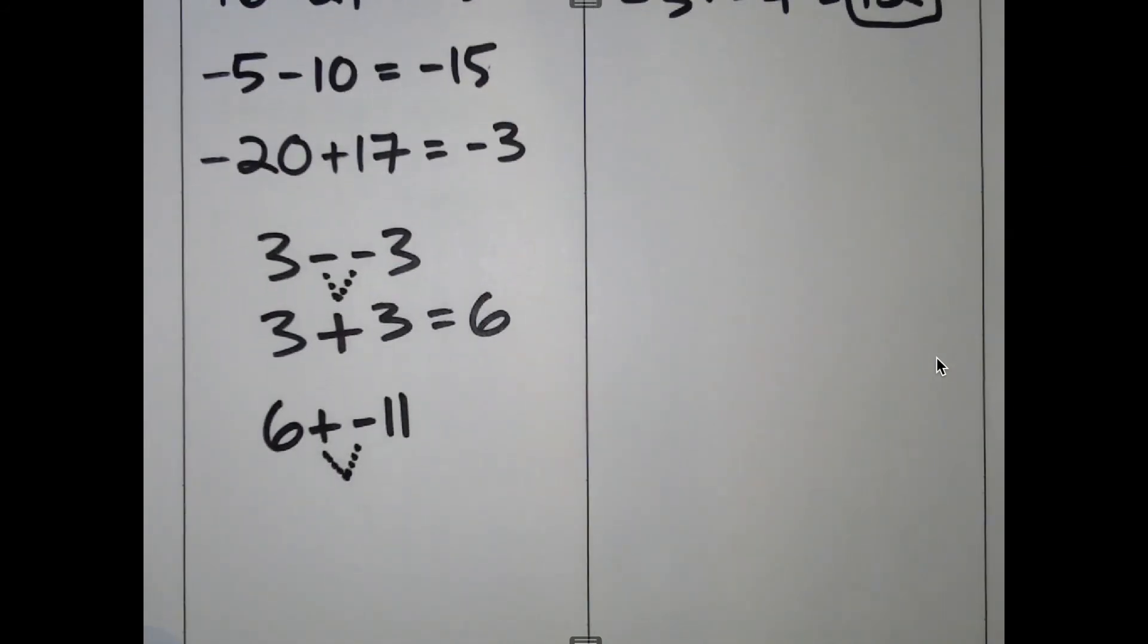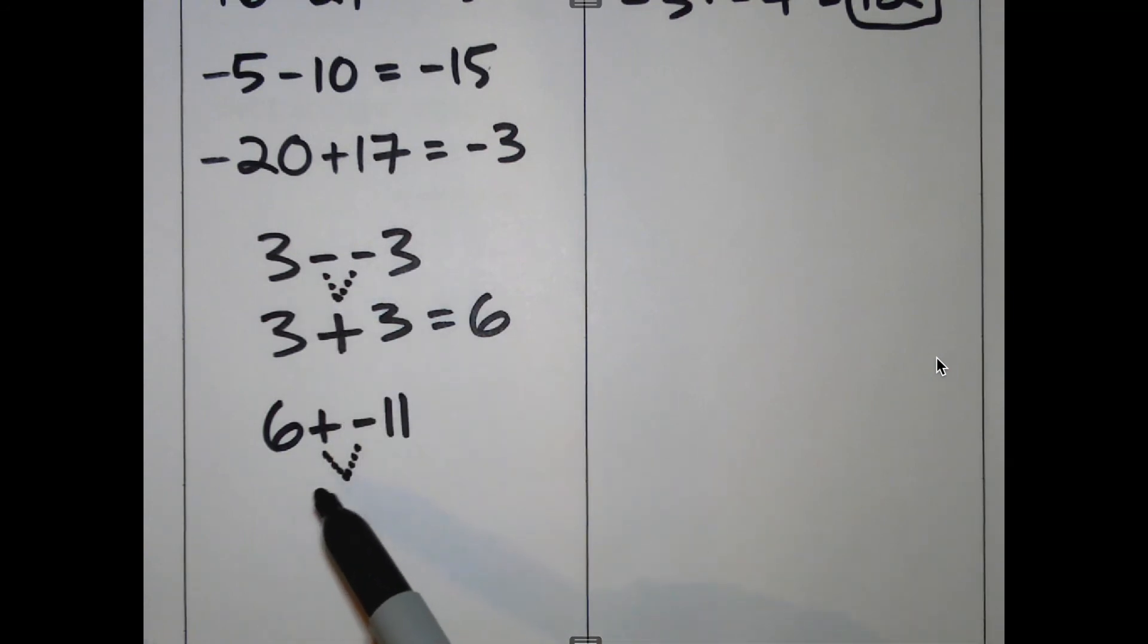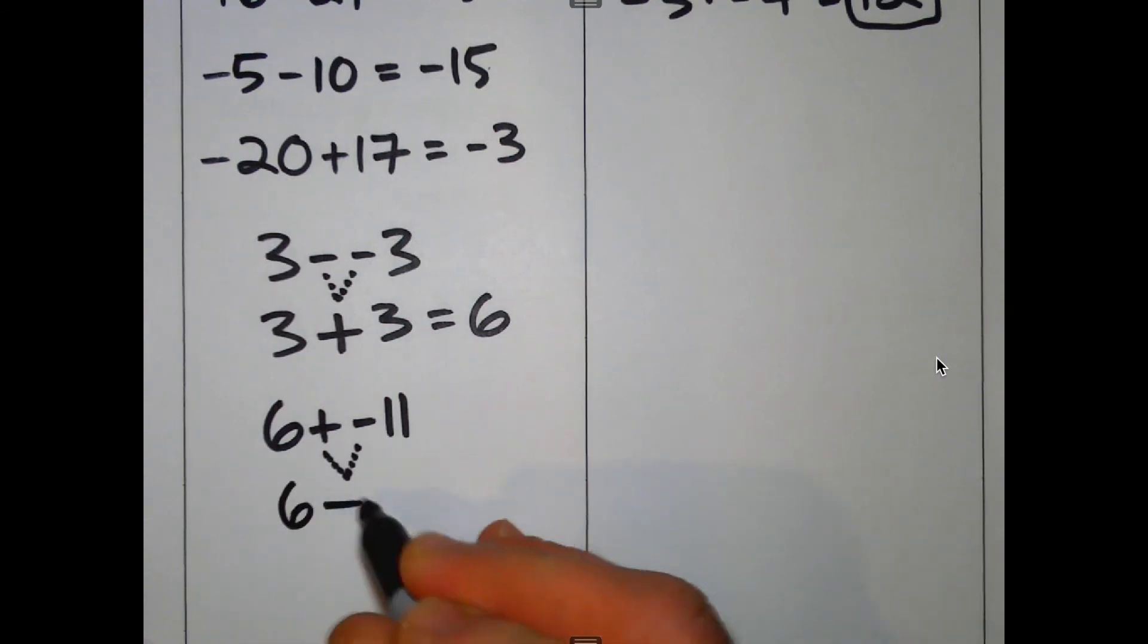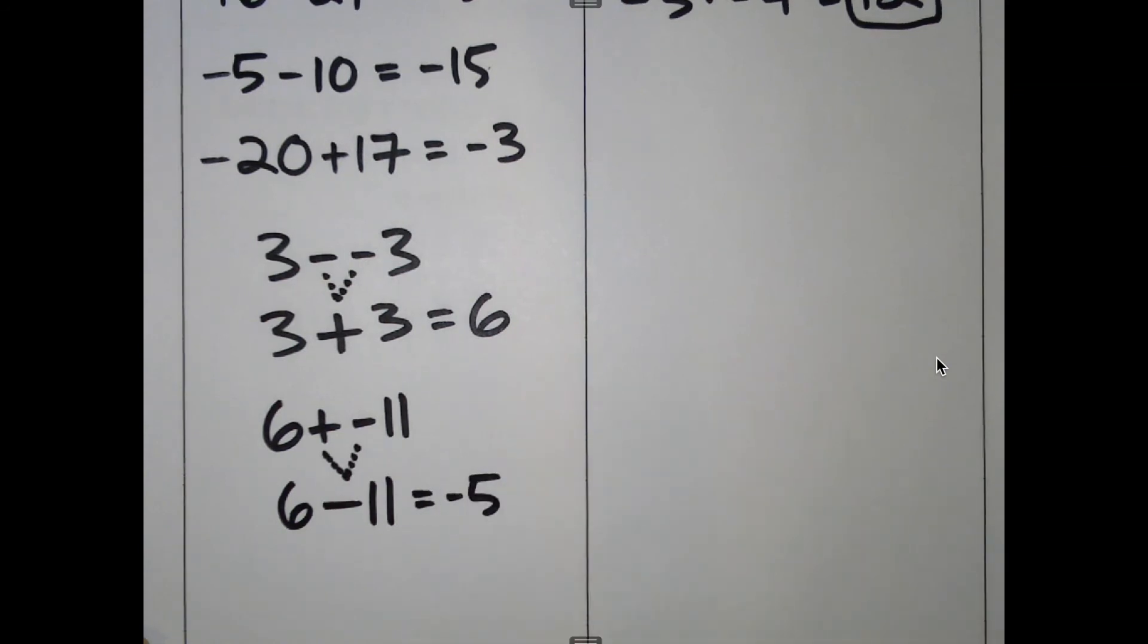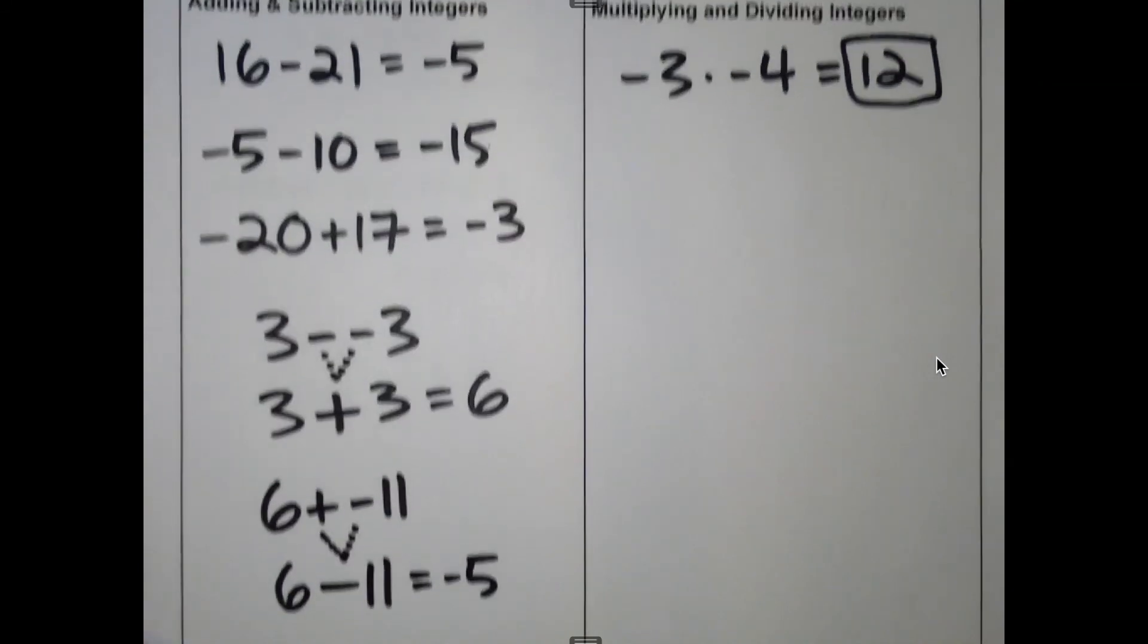So 3 minus a negative number becomes a positive, and 6 adding a negative number becomes a negative. So this would be 6 minus 11, and that equals negative 5. Different than the rules for multiplying and dividing.